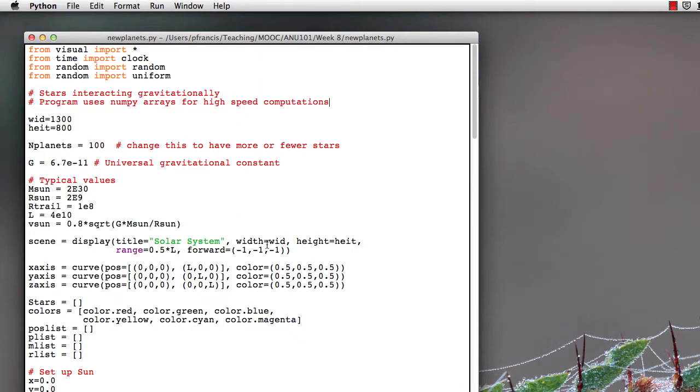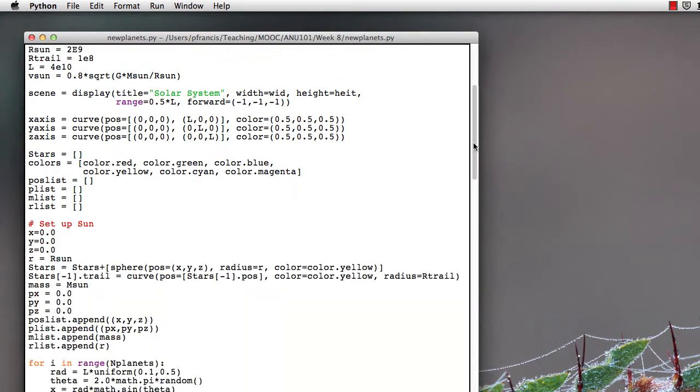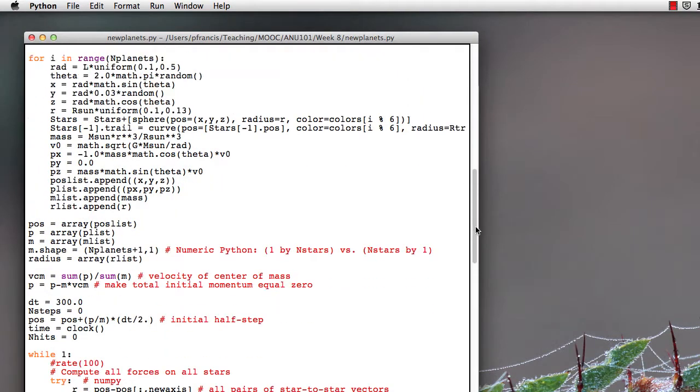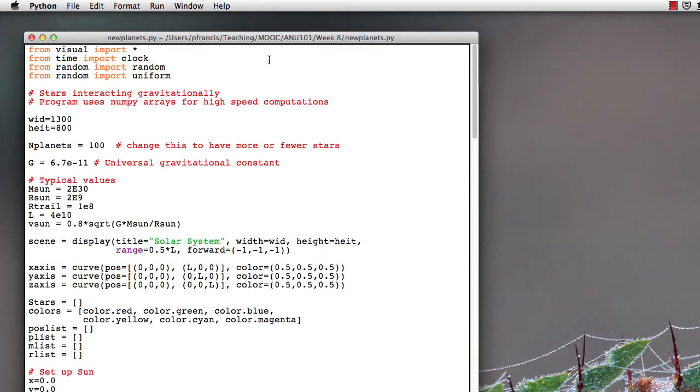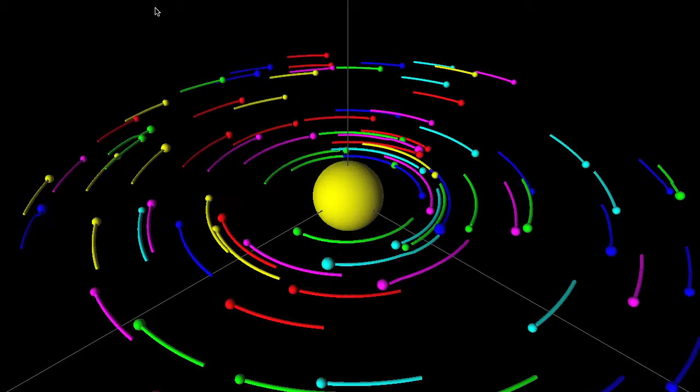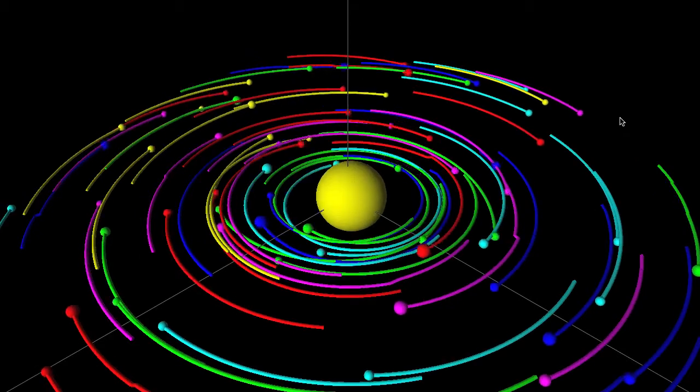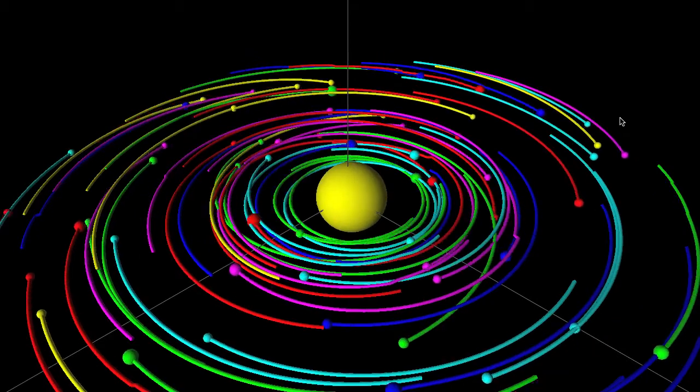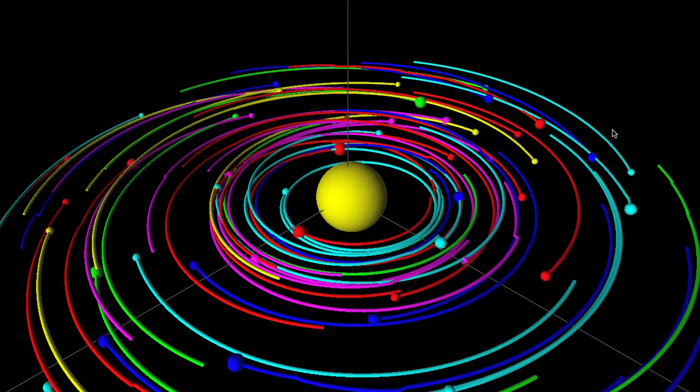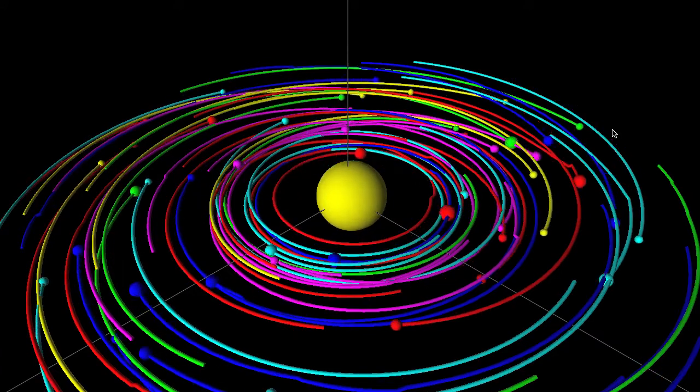We can simulate this using a little computer program here. There's a copy of this made available to you so you can run it for yourself. Let's run it and see what happens. Now I've put a bunch of small things in circular orbits around a star. Note that I made the planets much too big and much closer together than they really would be.